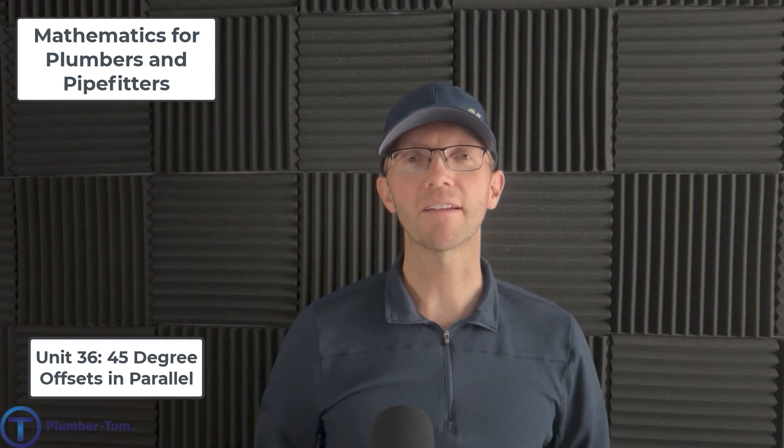Hello, welcome to this presentation from Mathematics for Plumbers and Pipefitters. My name is Thomas and in this presentation we are going to look at Unit 36 which is 45 degree offsets in parallel. This is a series of exercises that will help you to be able to install pipes in a way that looks awesome. It takes a little bit of math but when you know the math you can nail it.